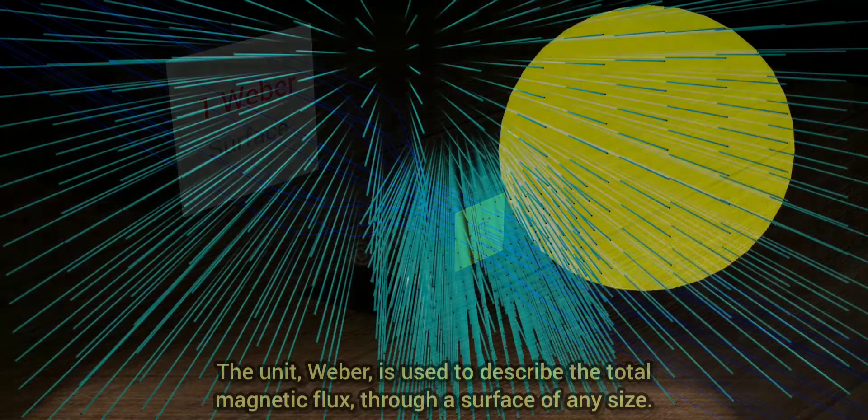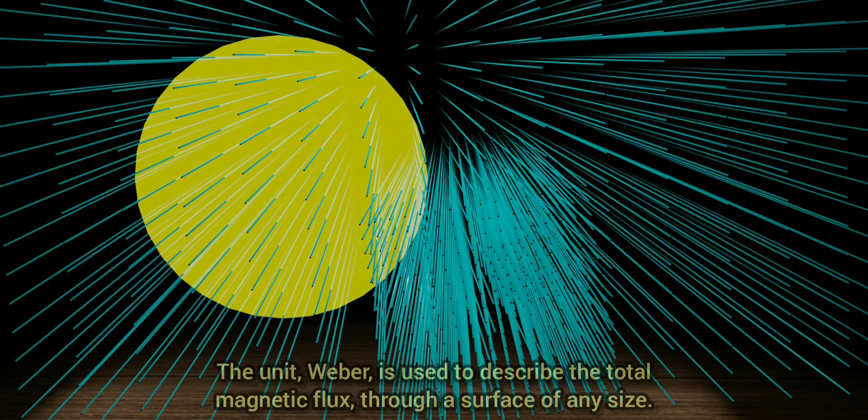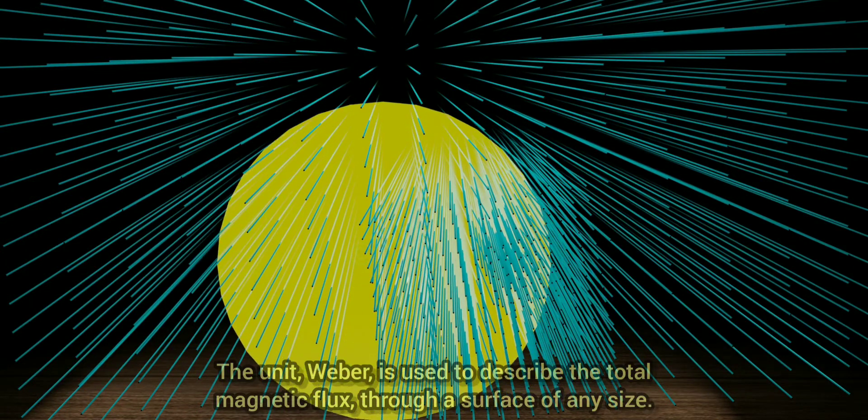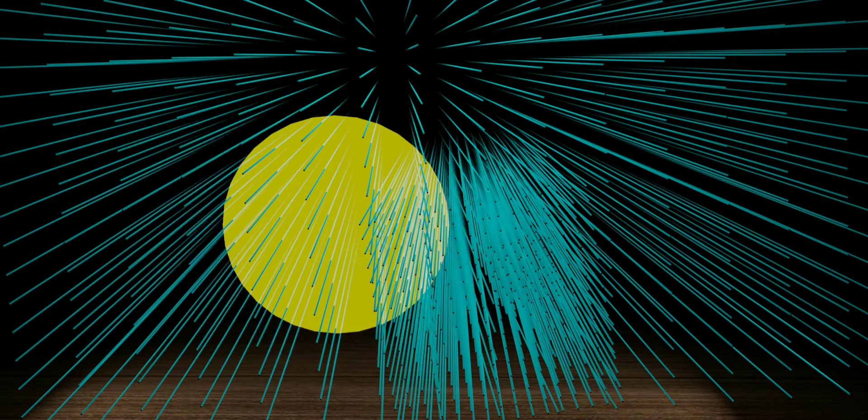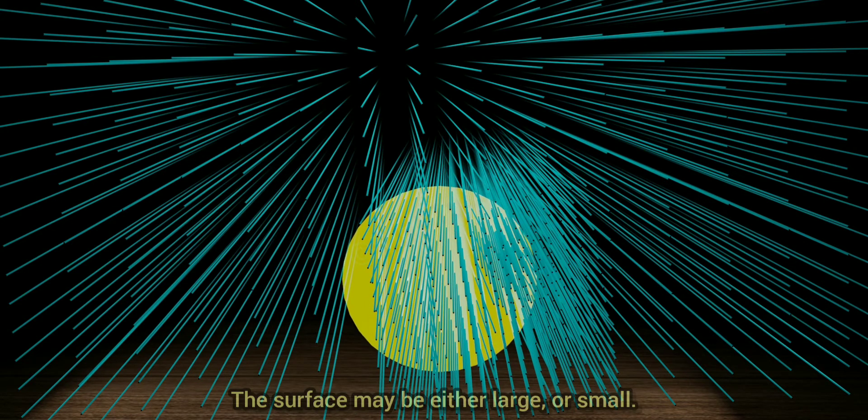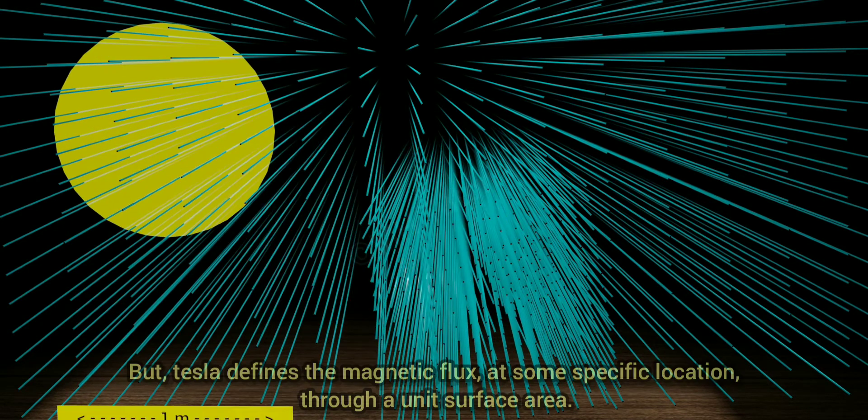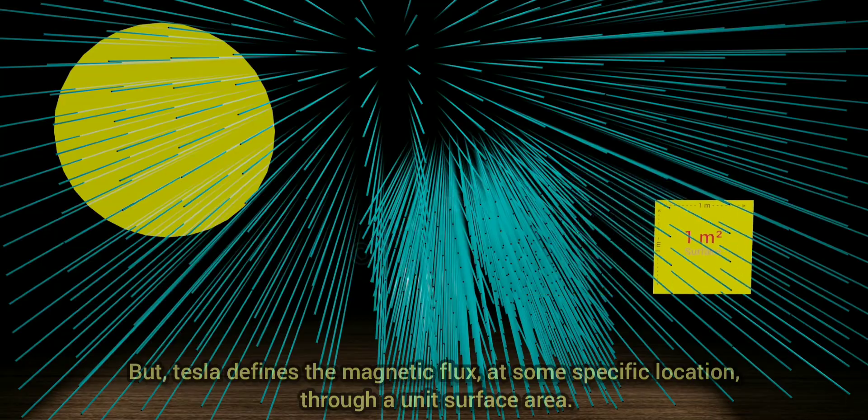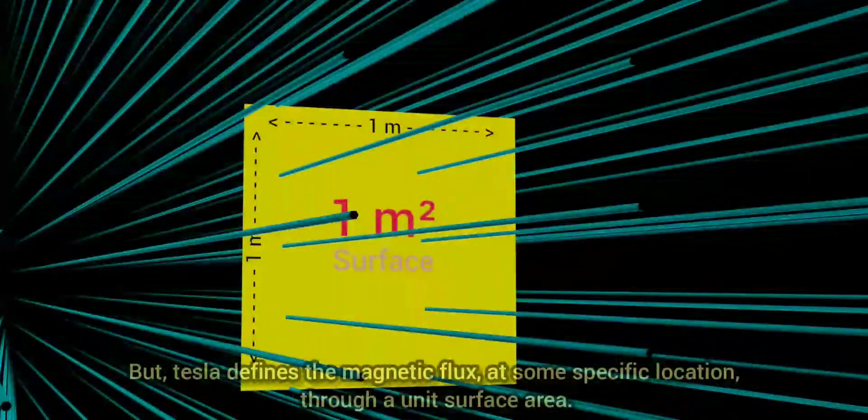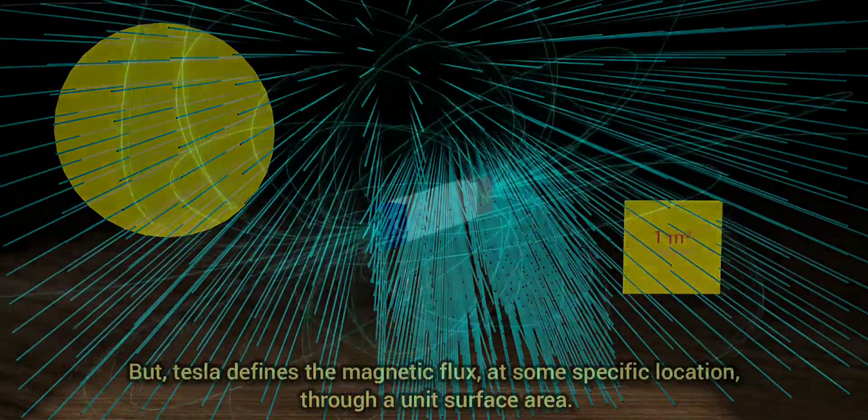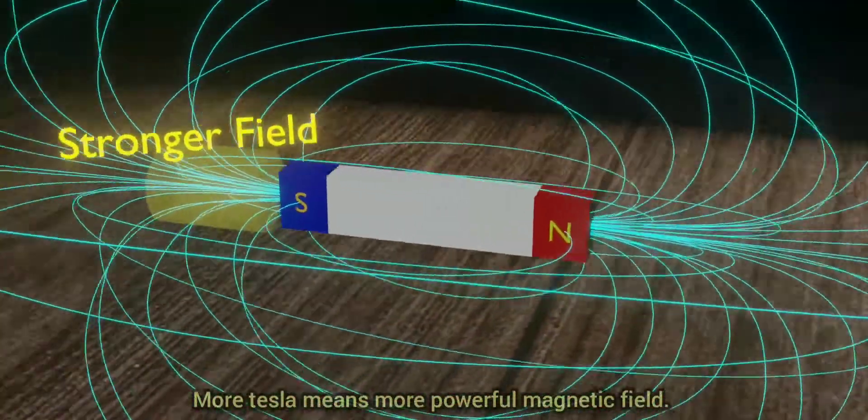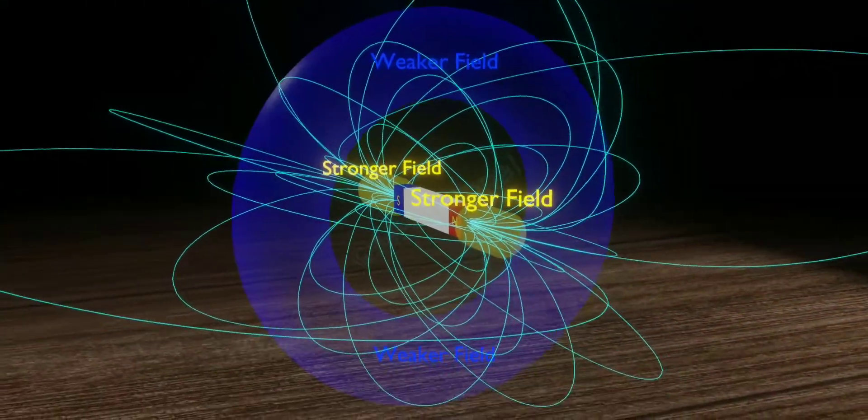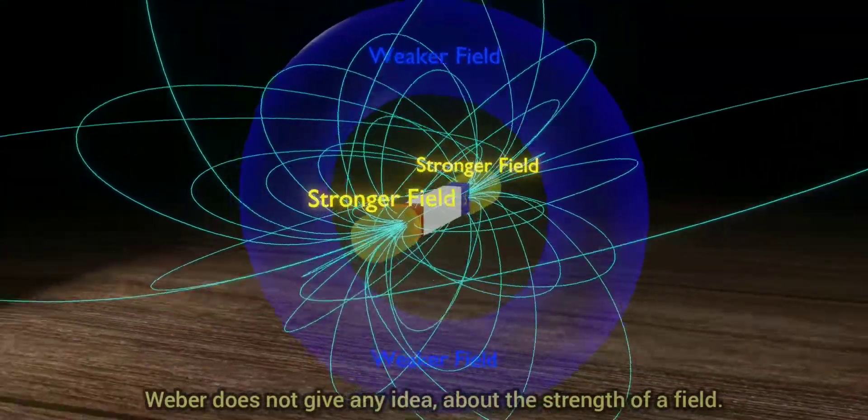The unit Weber is used to describe the total magnetic flux through a surface of any size. The surface may be either large or small. But Tesla defines the magnetic flux at some specific location through a unit surface area. More Tesla means more powerful magnetic field. Weber does not give any idea about the strength of a field.